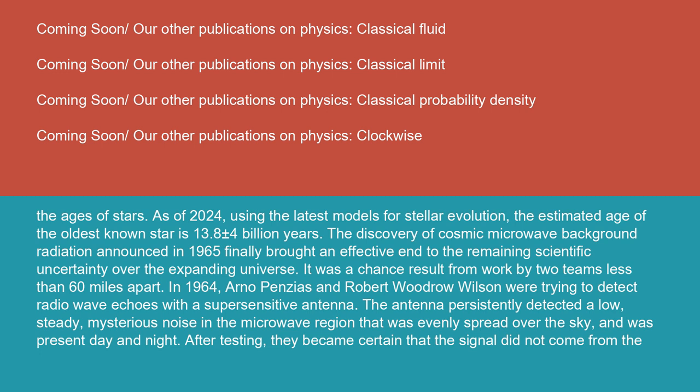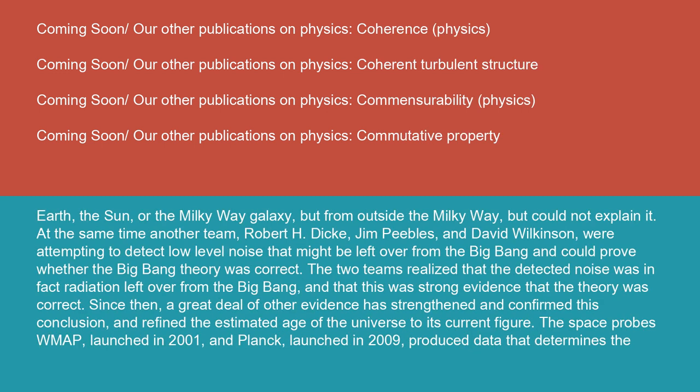It was a chance result from work by two teams less than 60 miles apart. In 1964, Arno Penzias and Robert Woodrow Wilson were trying to detect radio wave echoes with a super-sensitive antenna. The antenna persistently detected a low, steady, mysterious noise in the microwave region that was evenly spread over the sky and was present day and night. After testing, they became certain that the signal did not come from the Earth, the Sun, or the Milky Way galaxy, but from outside the Milky Way, but could not explain it.